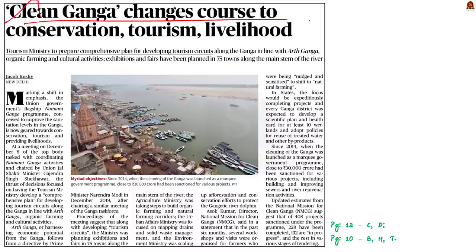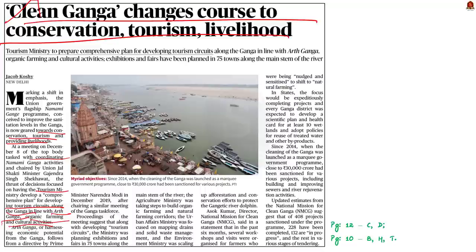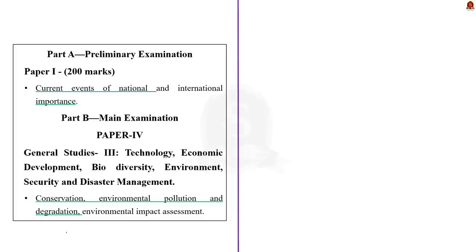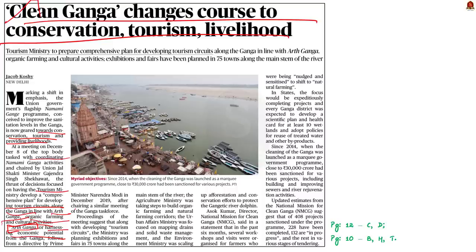The next news article talks about the Clean Ganga Mission. The mission is shifting its emphasis from just improving sanitation levels in the Ganga to conservation, tourism and providing livelihoods. The Union Jal Shakti Minister is coordinating with the tourism ministry to develop a comprehensive plan for tourism circuits along the Ganga, in line with Arth Ganga — harnessing economic potential from the river. The agriculture ministry is building organic farming corridors, while the urban affairs ministry focuses on mapping drains and solid waste management, and the environment ministry is scaling up afforestation and conservation of Gangetic river dolphins.